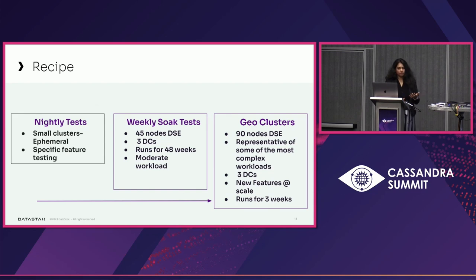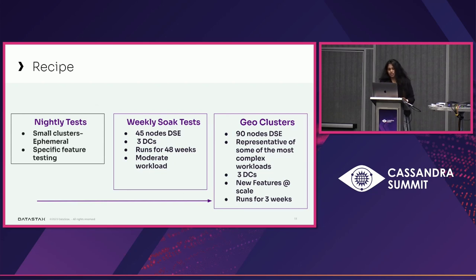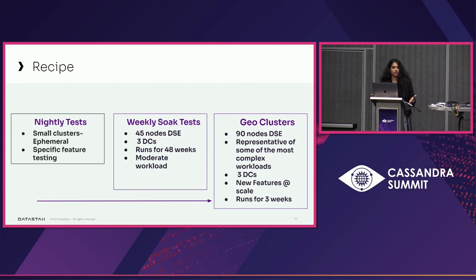What does it mean in our world? Our nightly tests have small ephemeral clusters that come up every night and we do exhaustive testing — thousands of tests get run. Then we have weekly soak tests with about 45 DSE nodes, three DCs, running for 48 hours with moderate workload. And geo clusters are really huge clusters — 90-node DSE clusters, representative of some of the complex workloads and data patterns that are more demanding on the infrastructure footprint, also three DCs. We put our newest and greatest features at scale to test there, and it runs for three weeks. The infrastructure footprint, complexity, and time involved go exponentially more as we go towards the right.